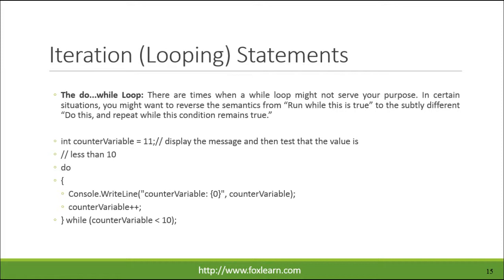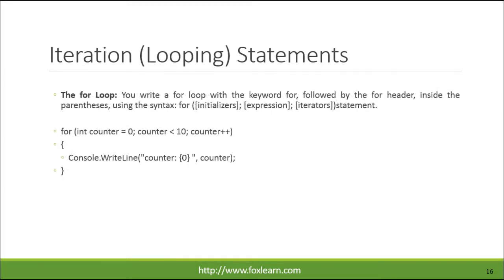The do-while loop: there are times when a while loop might not serve your purpose. In certain situations, you might want to reverse the semantics from 'run while this is true' to the subtly different 'do this, and repeat while this condition remains true.' The for loop: you write a for loop with the keyword for, followed by the for header inside the parentheses, using the syntax: for (initializers; expression; iterators) statement.